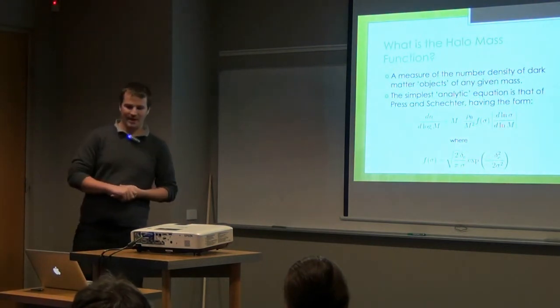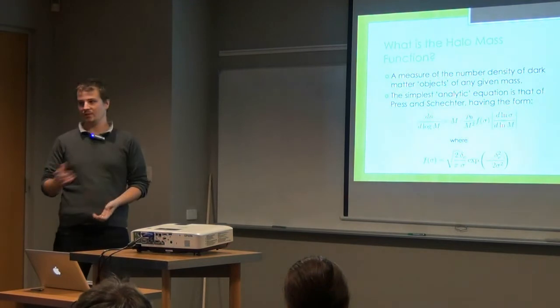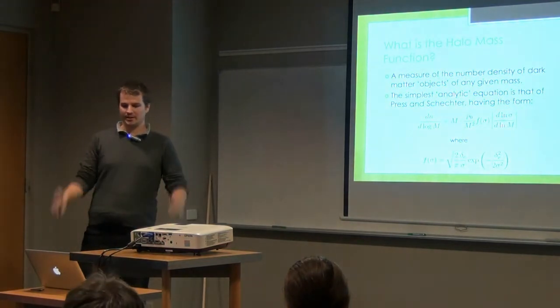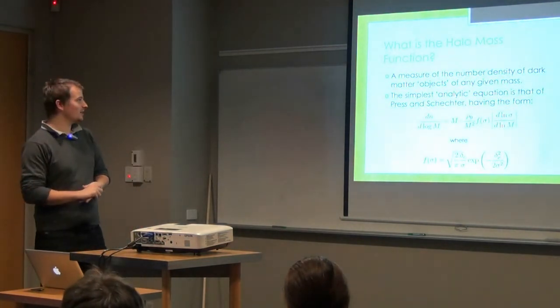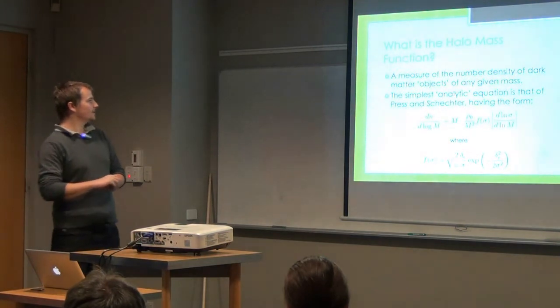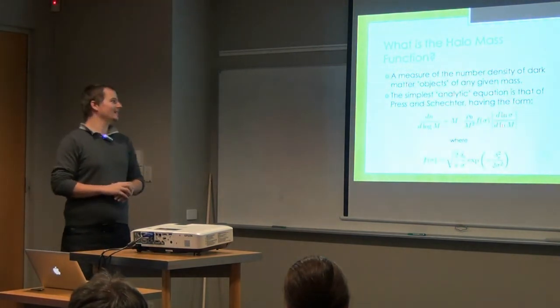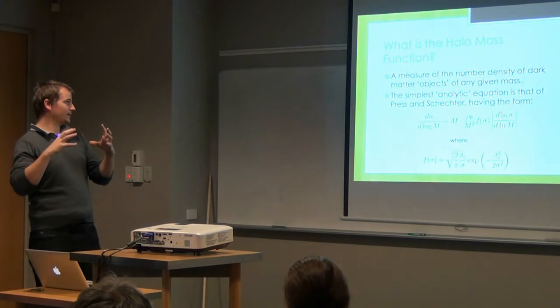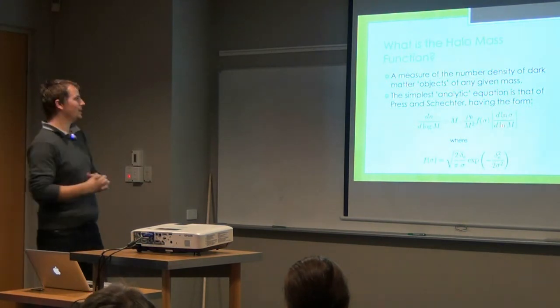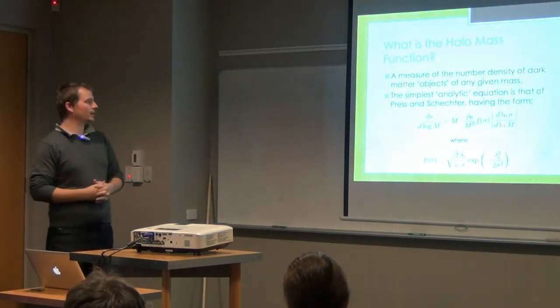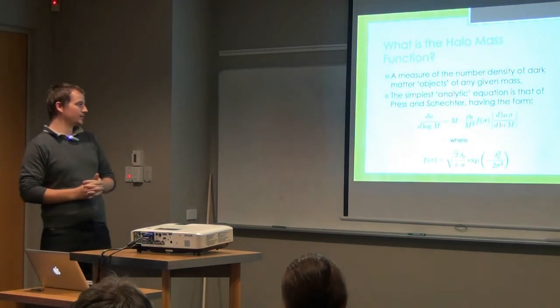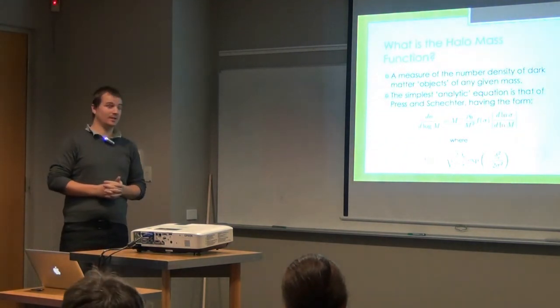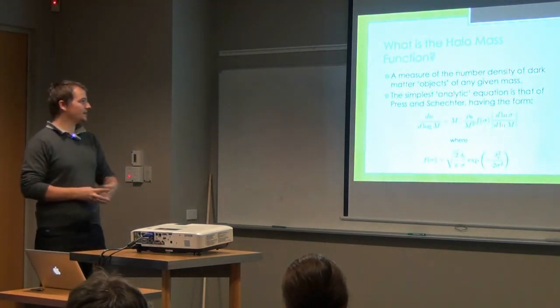What is the halo mass function? The halo mass function is really a measure of the number density of dark matter objects of any given mass. Objects are defined in some way where they are sort of self-gravitationally bound. So the simplest analytic equation is that of Press-Schechter. This is from about 1974, I think, and it has this form.